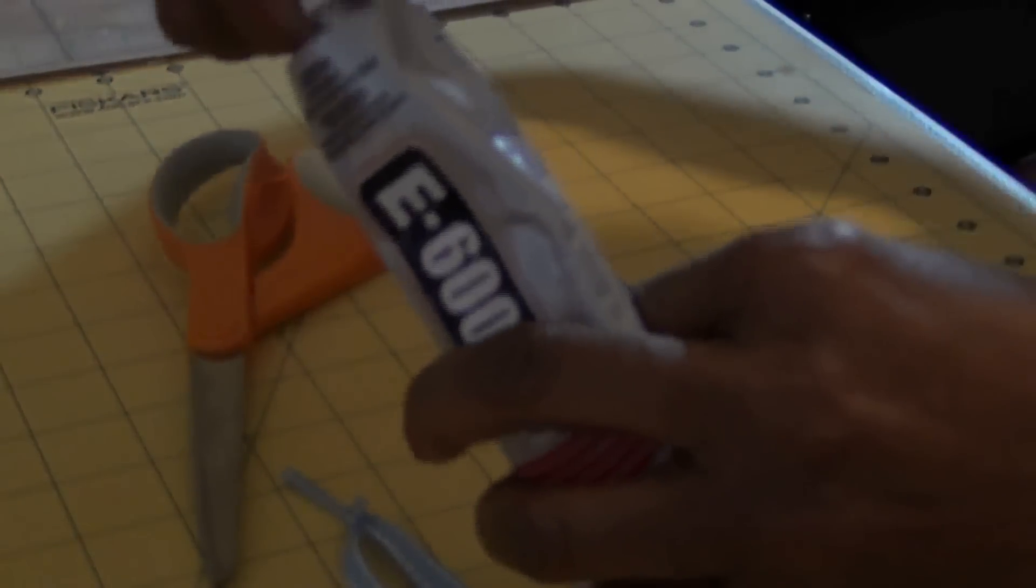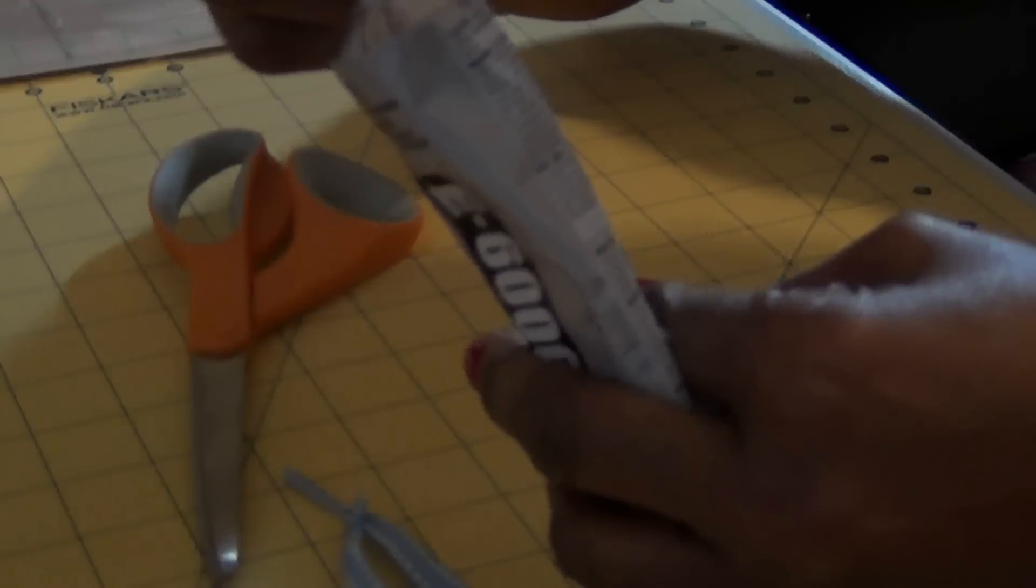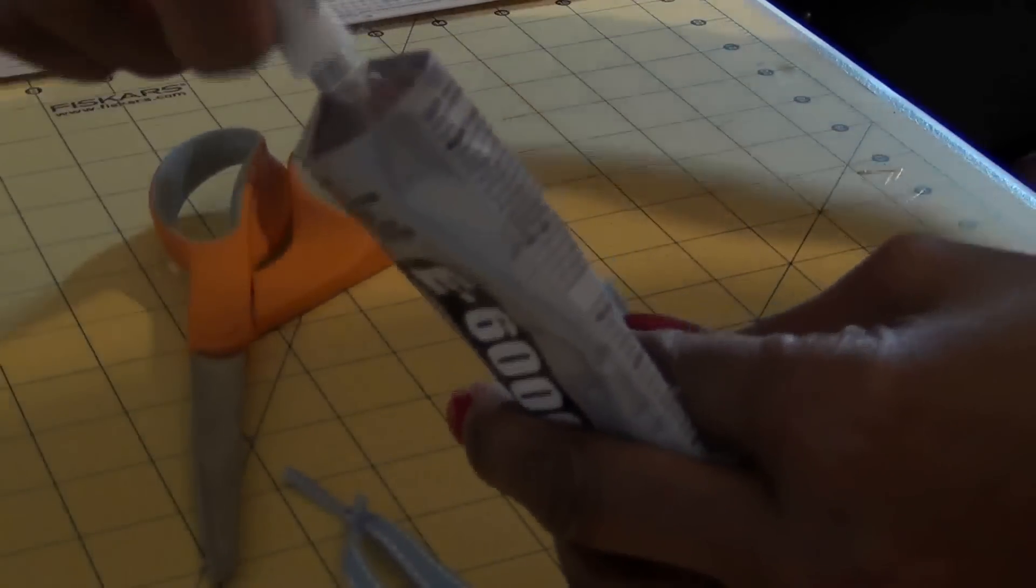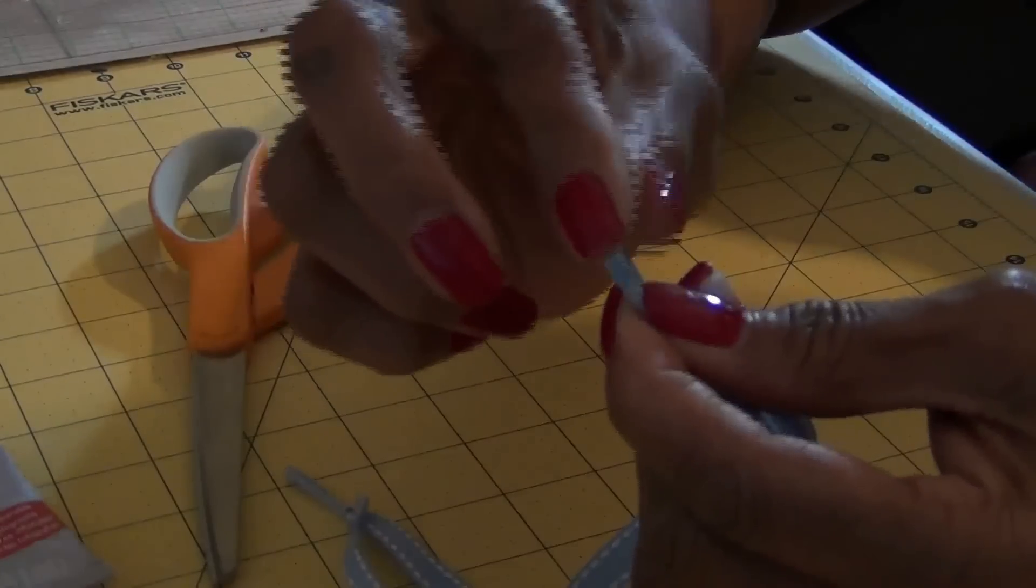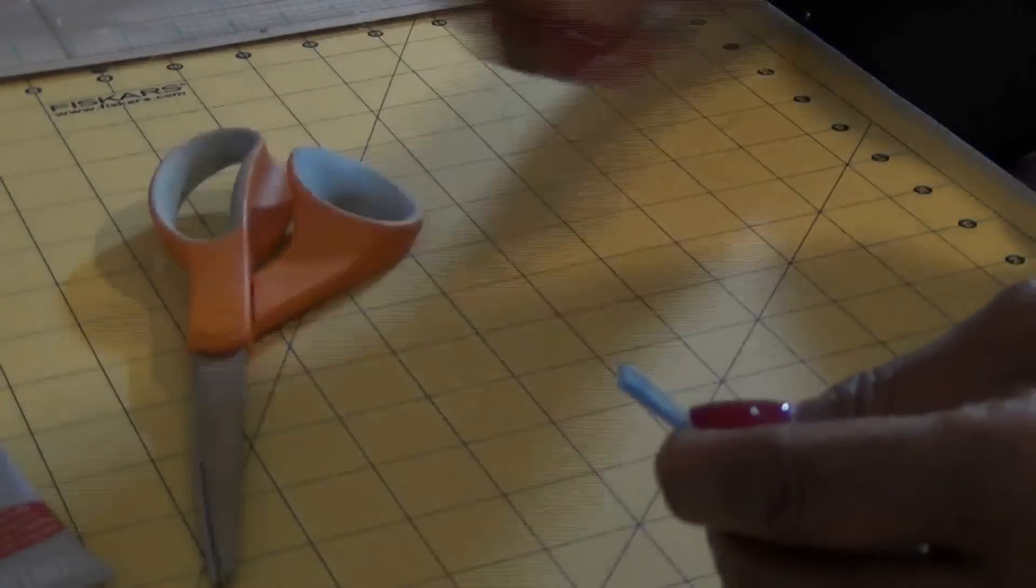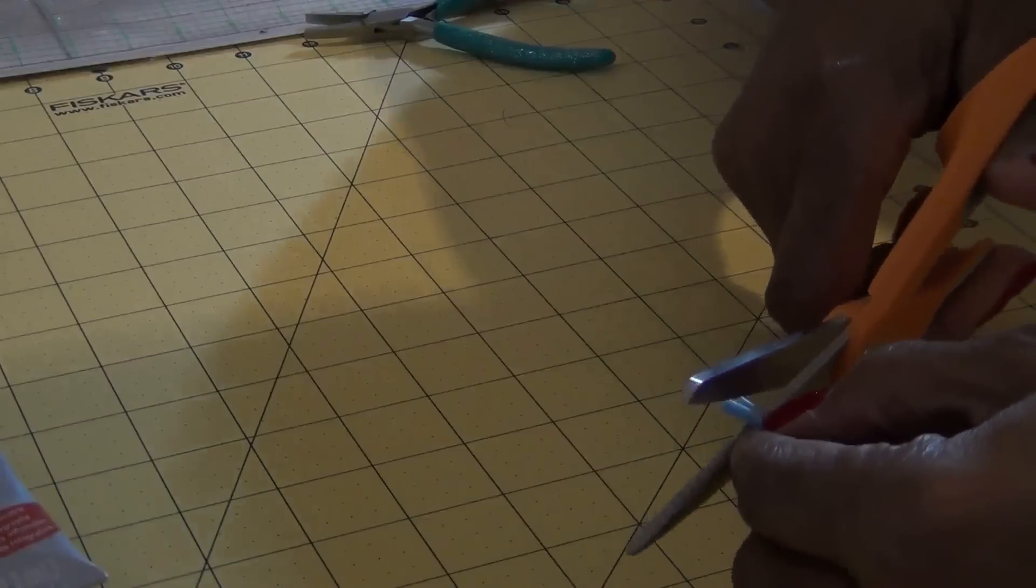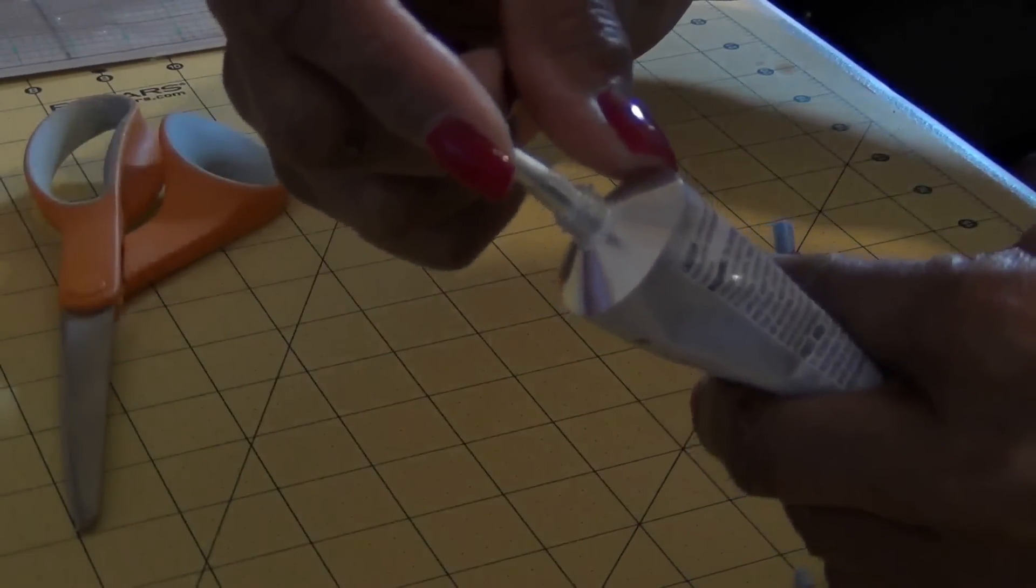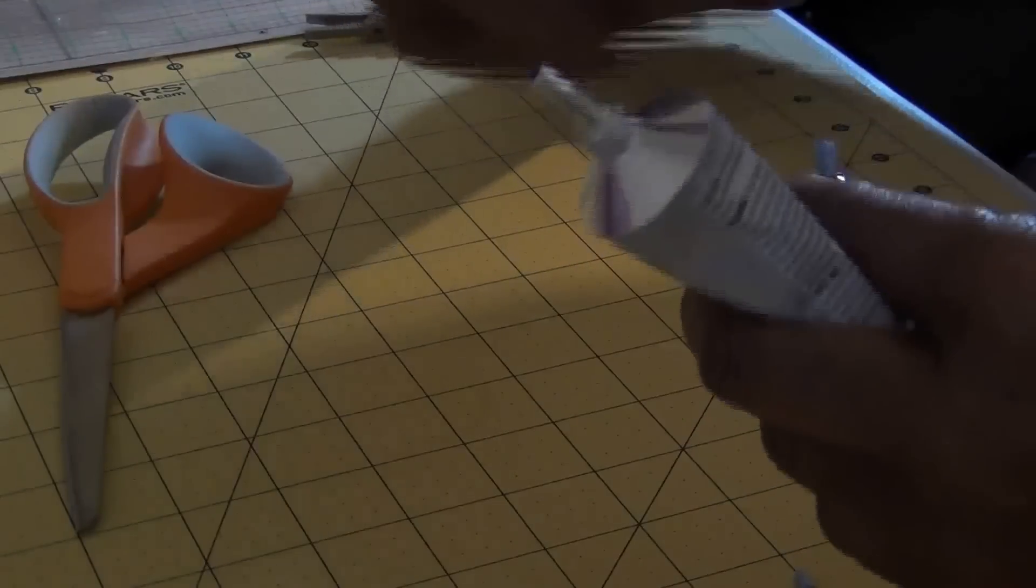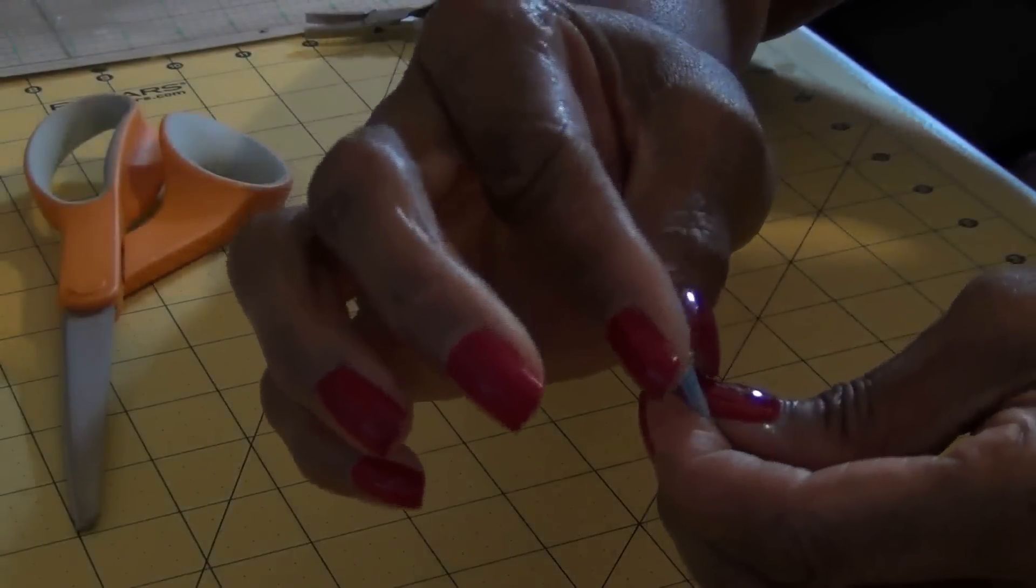I'm going to use some e6000. Put a little bit on your finger, just a dab of e6000, and we're gonna put that right on the very ends of these. Take the other ends and cut off about 1/8 of an inch of that. Take the e6000 and just dab it right on the tops of these laces.